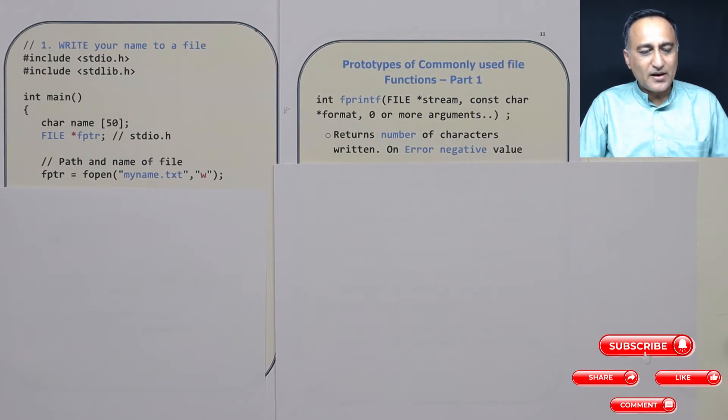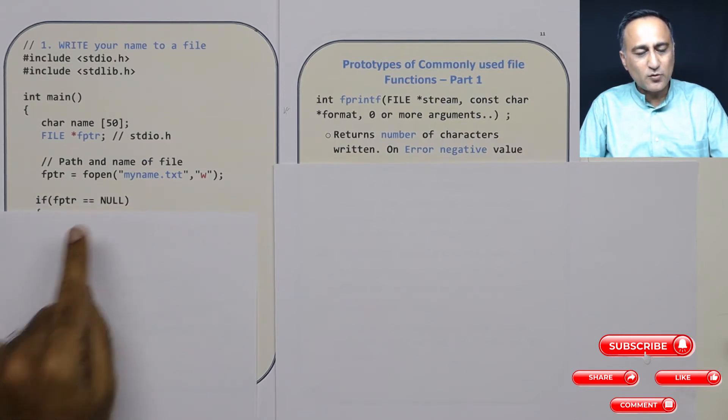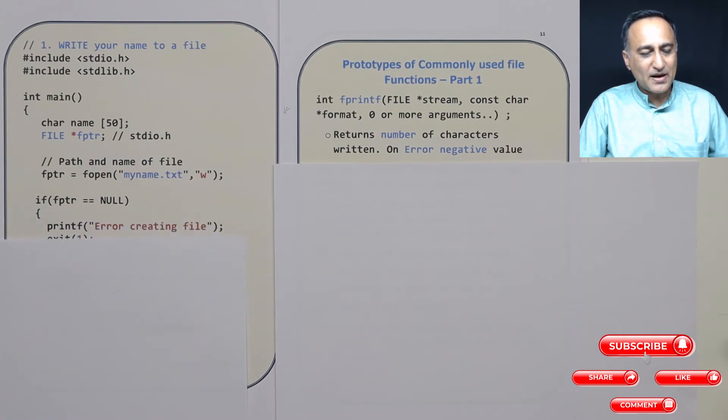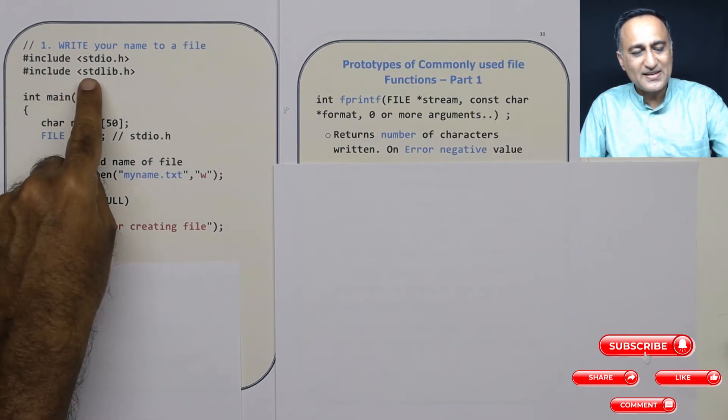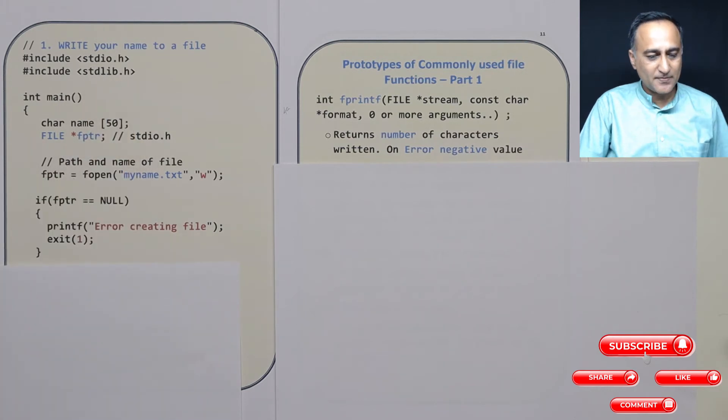Next thing, when I try to write a file, there may be problems that the hard disk is full or the hard disk is not working. So then what will happen is fptr in that case will turn out to be null. If fptr is equal to null, it indicates that I am having some error creating the file. That's why I exit with a flag of one. This exit prototype is declared in stdlib.h. So I exit and then I come off.